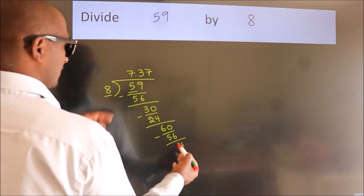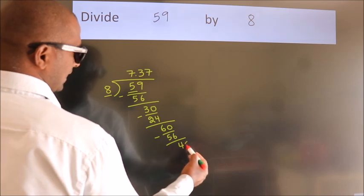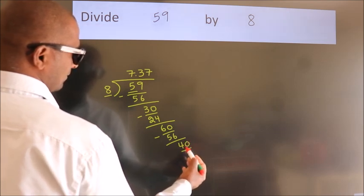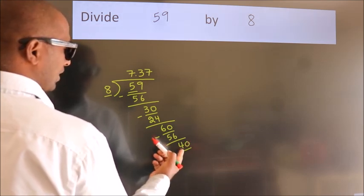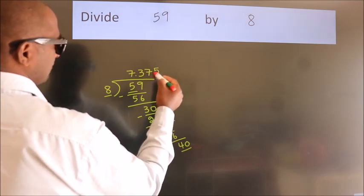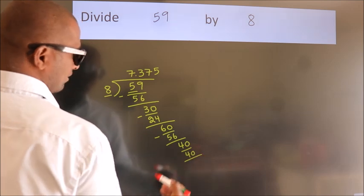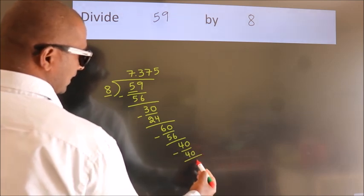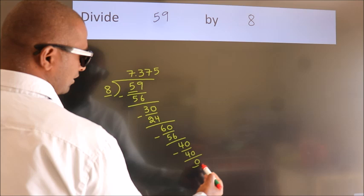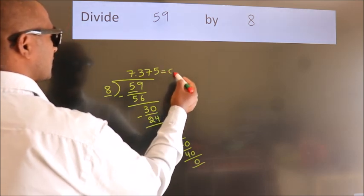After this we already have the decimal, so directly take 0, so 40. When do we get 40 in the 8 table? 8 times 5 equals 40. Now we subtract. We get 0. Here we got remainder 0, so this is our quotient.